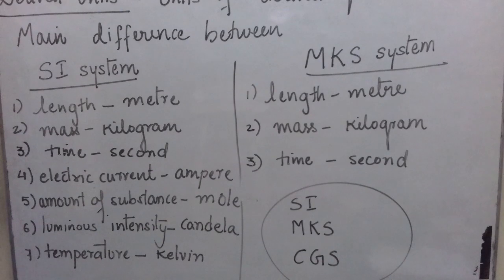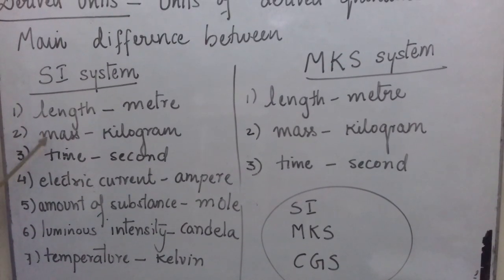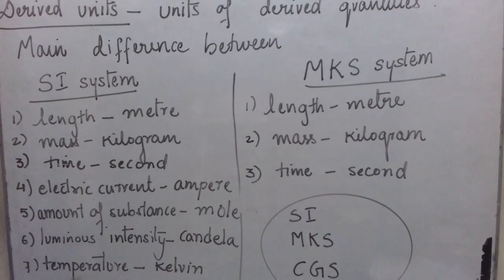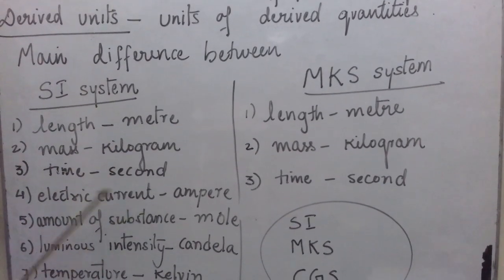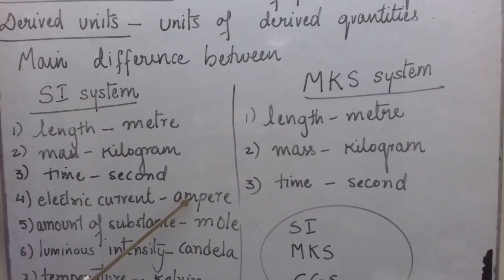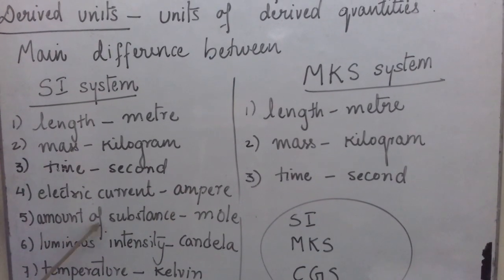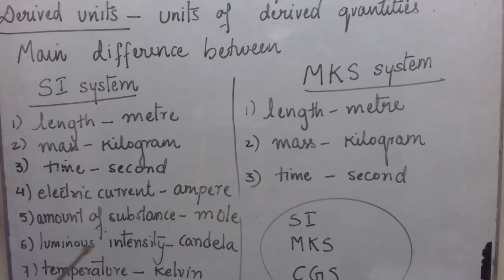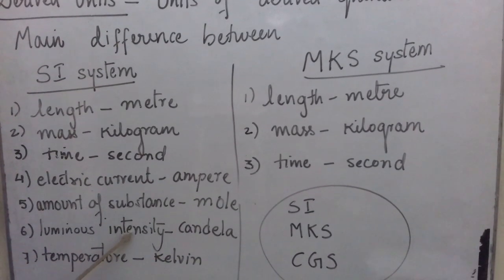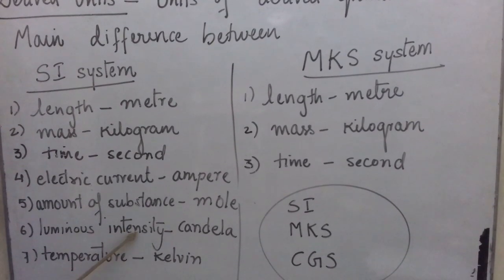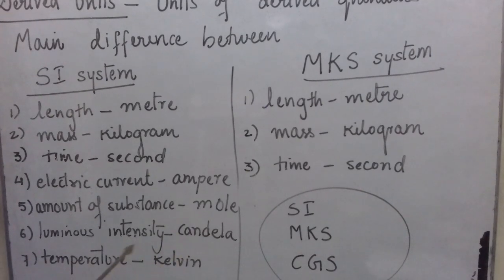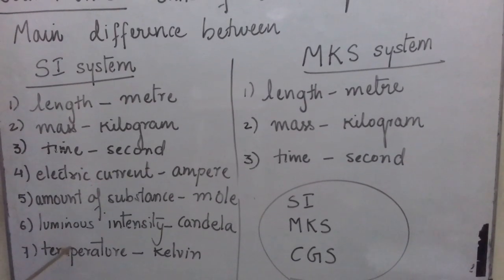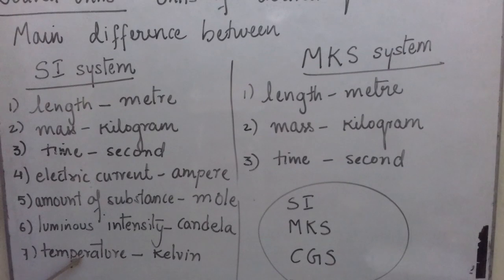In the SI system, which are the seven fundamental quantities? The first three are common: length, mass, and time. There are four more: the fourth is electric current, whose fundamental unit is Ampere — you must have heard about this in lower classes. The fifth is amount of substance, used generally in chemistry, whose fundamental unit is Mole. The sixth is luminous intensity, used in the study of light and optics, whose fundamental unit is Candela. And lastly, the seventh is temperature, a very commonly heard physical quantity, whose fundamental unit is Kelvin.